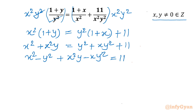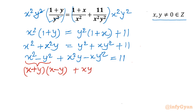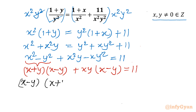Now I can use the algebraic identity for the difference of two squares: x squared minus y squared equals (x plus y)(x minus y). I can also see that x minus y is common in the remaining terms. So the equation factors as: (x minus y)(x plus y plus xy) equals 11.